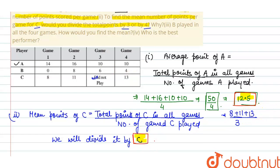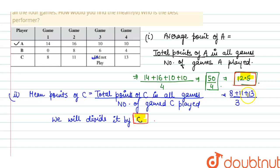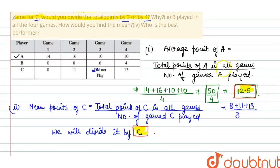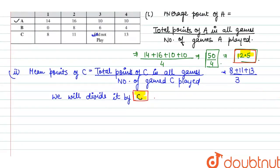Now the third part is saying B played in all 4 games. How would you find the mean? Now come to B for the third part of the question. It is asking for B. We have to find the mean for B. So it means total points of B.